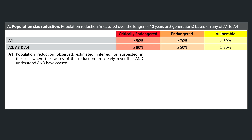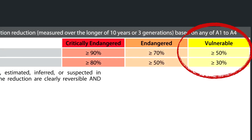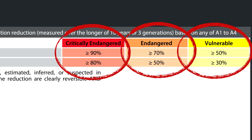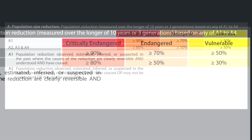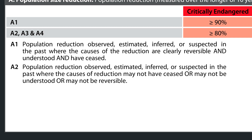Assuming that hunting had stopped at a 50% decline, 70% decline, or 90% decline, that would have given the passenger pigeon vulnerable, endangered, or critically endangered status. Then there's A2: population reduction observed, estimated, inferred, or suspected in the past, where the causes of reduction may not have ceased, or may not be understood, or may not be reversible.